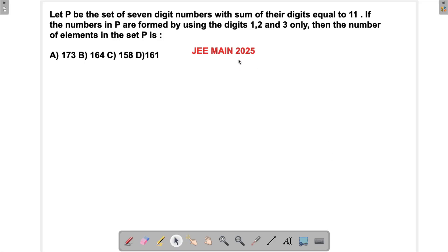Let's solve a problem which appeared in JEE Main 2025. We need to find the set of all seven-digit numbers formed using the digits 1, 2, and 3 such that their sum equals 11.